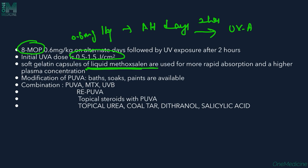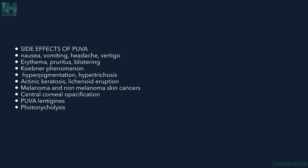Modifications include PUVA baths, soaks, or paints. Combination therapies with PUVA include methotrexate and UVB. There is also RePUVA, where retinoids — oral acitretin — are combined with PUVA therapy. Topical steroids, urea, coal tar, and salicylic acid can also be combined with PUVA.